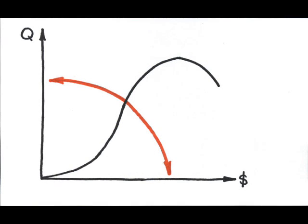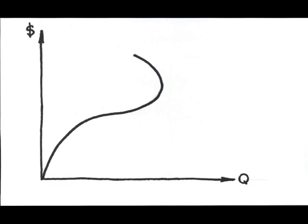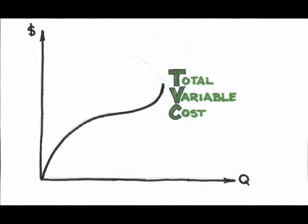So now we have a cost diagram. Notice we can ignore the upper portion, since no producer will want to be paying out more money for less output. But this doesn't represent all of our costs, does it? This diagram considers only the labor cost, or the variable cost.